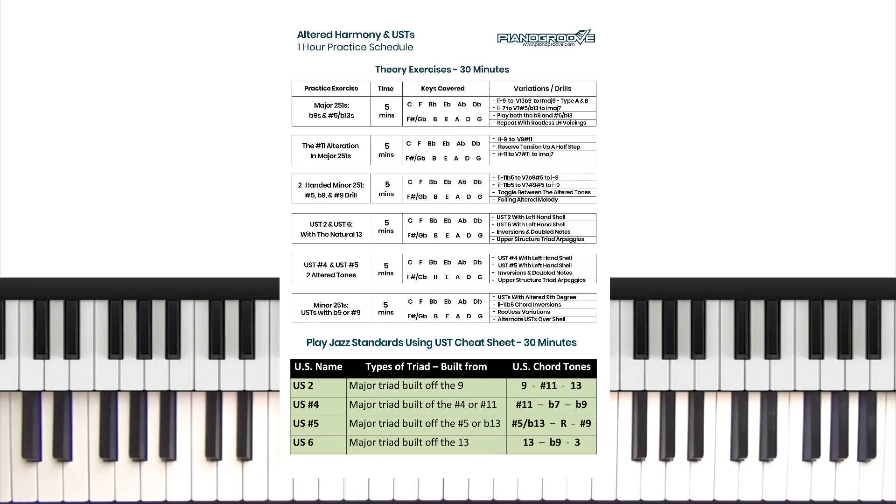For the first two drills, we're going to isolate single alterations over the major 2-5 and the major 2-5-1 progression. For the third drill, we will then introduce the minor 2-5-1 and explore the role of the flat 9, the sharp 9, and the sharp 5 or flat 13. It's worth noting that the sharp 5 and the flat 13 is the same note and different musicians will refer to it differently. I prefer to call it the sharp 5, but you will hear other people say the flat 13, so understand it's just two ways of referring to the same thing.